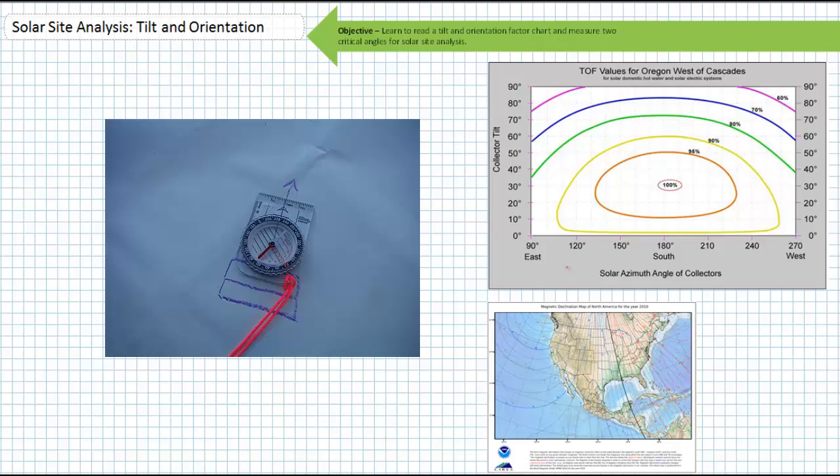Now turn and face the direction you intend to measure their orientation of. For example, if I wanted to determine the orientation of a roof upon which I was going to place a PV system, I'd climb up on the roof or just stand at the base of it and put my back against the wall supporting the roof.